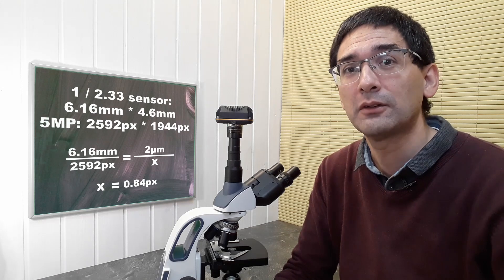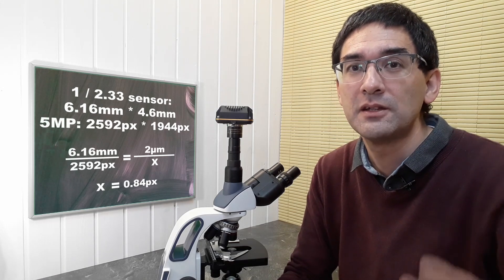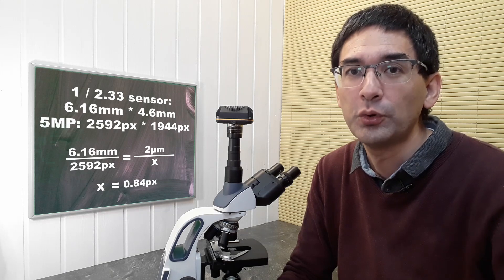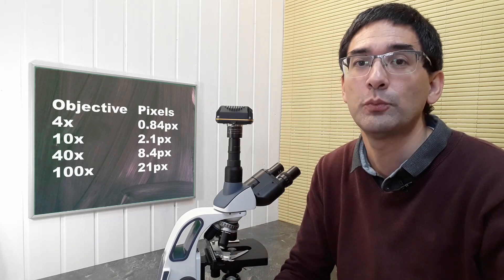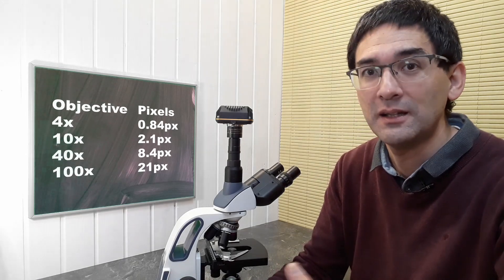To continue the calculations, I'm going to assume I'm using a 40 times objective, otherwise it wouldn't make sense. I simply multiply everything by 10. With a 40 times objective, I would get 8.4 pixels because 40 times is 10 times more than four times, so the number of pixels has to be 10 times as much.